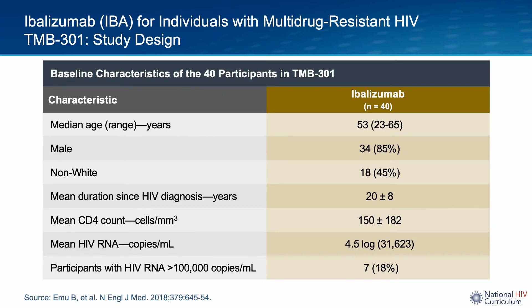In total, 40 individuals enrolled into the study. The median age, the proportion identifying as male, and the proportion identifying as non-white are shown here. The mean duration since HIV diagnosis was 20 years. The mean CD4 T cell count was below 200, and the mean HIV RNA or viral load at baseline was 4.5 log, with 18% of participants having a viral load above 100,000 copies at entry.